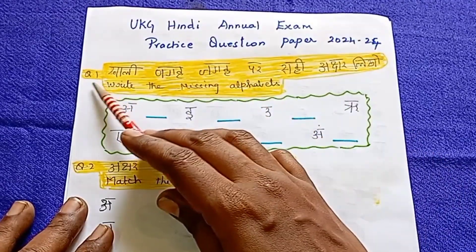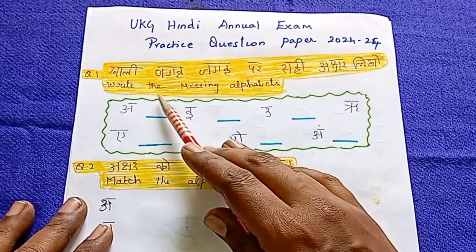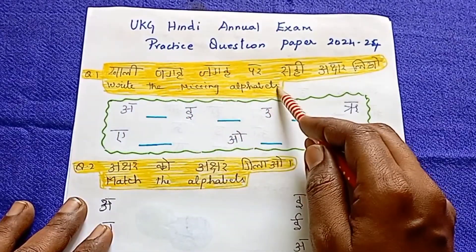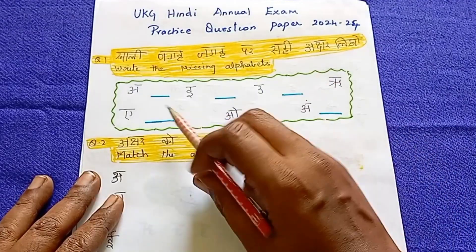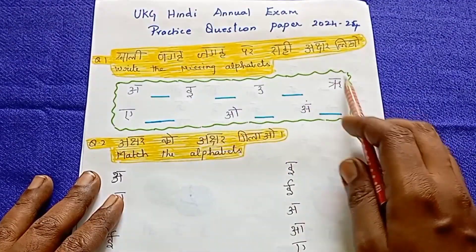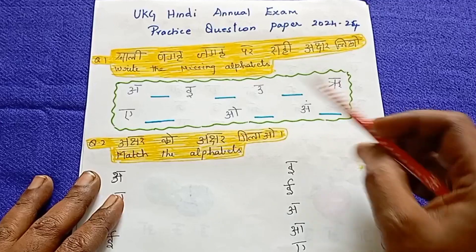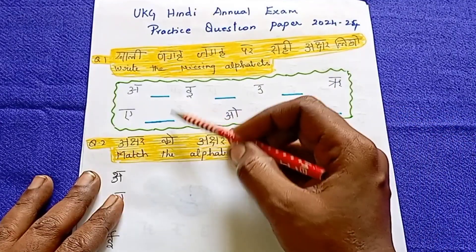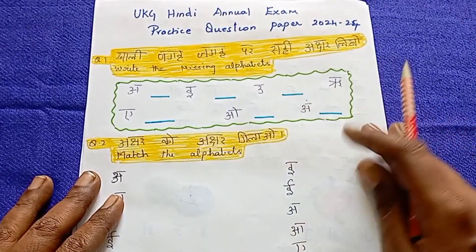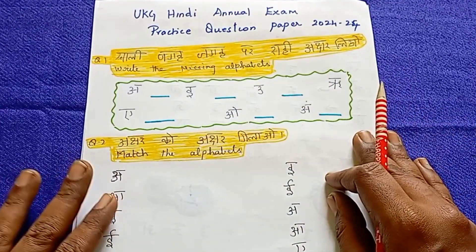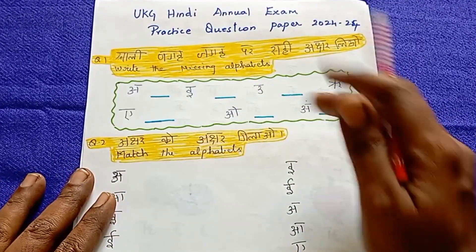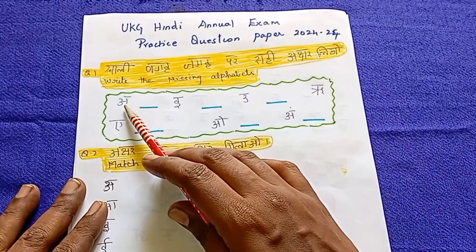When we talk about the first question, we will write the missing alphabet. We have some alphabets and some alphabets are missing. What are the missing alphabets? Let's write the missing alphabets.